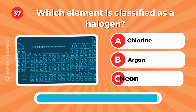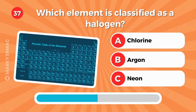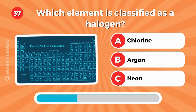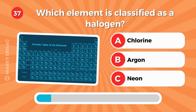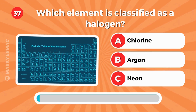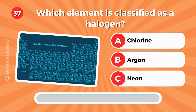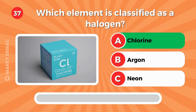Which element is classified as a halogen? Chlorine.